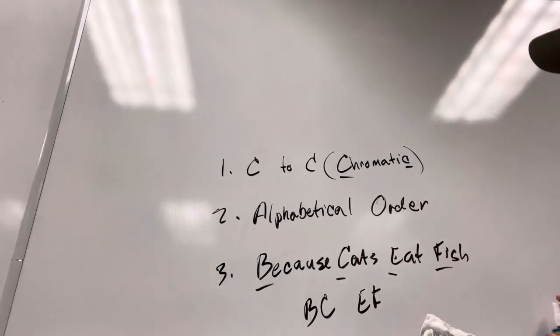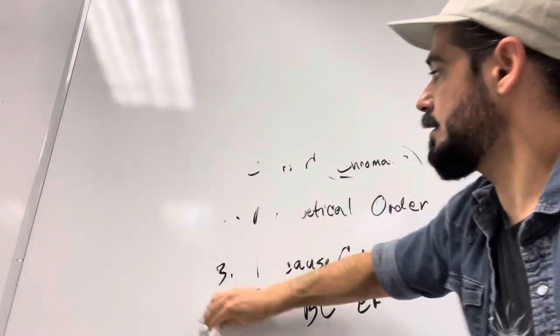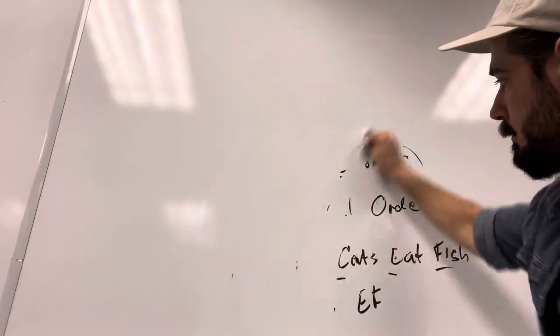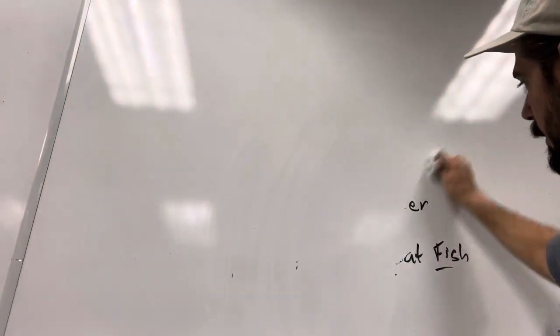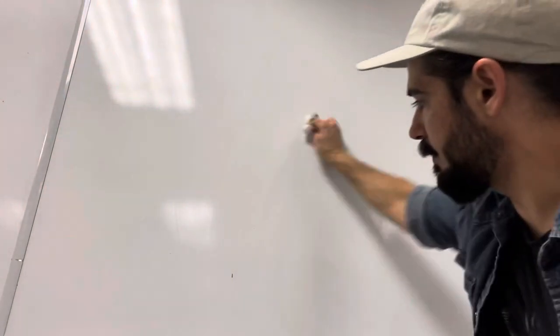It is a grouping of two notes, B and C, because cats, E and F, eat fish. It means that when we're dealing, going between those two sets of notes, between B and C and E and F, there's kind of an exception to a rule that we typically do when we move from note to note. So, C to C, alpha order, because cats eat fish. Have those three rules written down somewhere in your notes. Go to them every time you need to make a chromatic scale.